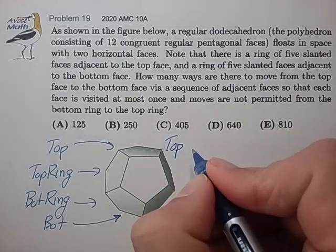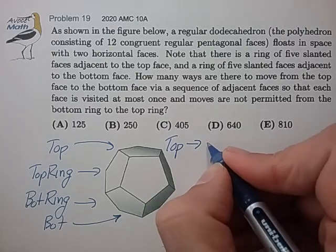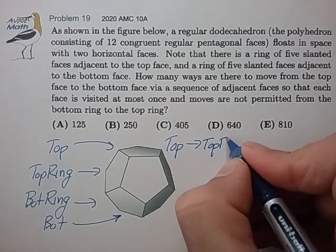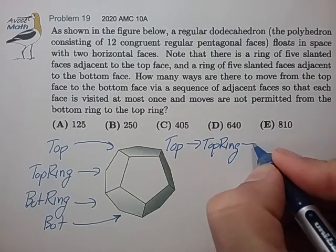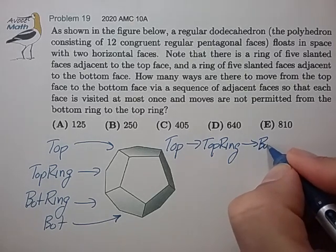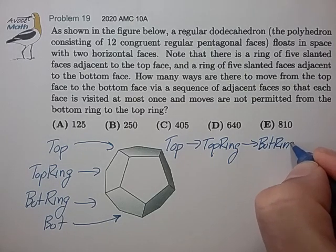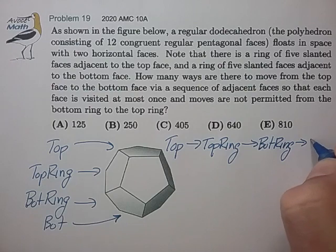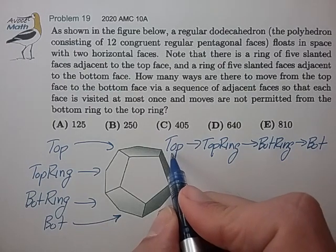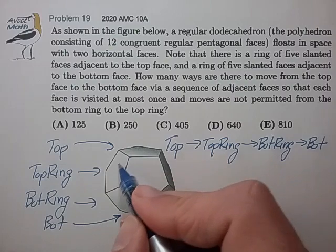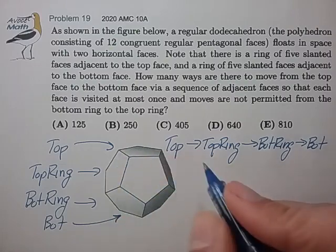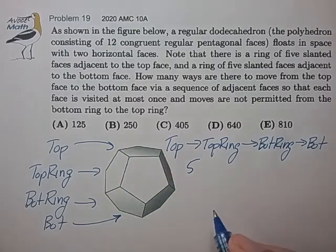So we have a top face. We're going to move to a top ring, then we're going to move to a bottom ring, and then we're going to move to the bottom. So to go from the top to the top ring, there's five choices available to do that. So we have a factor of five.